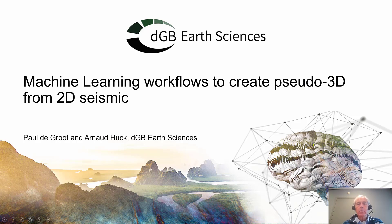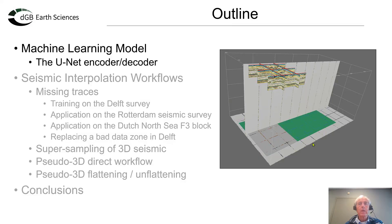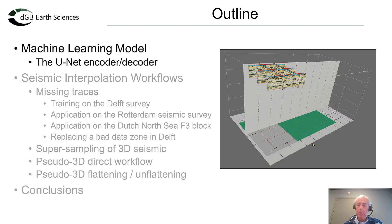Welcome to this presentation about machine learning workflows to create pseudo 3D cubes from 2D seismic. My name is Paul de Groot and my co-author is Arno Huck. I will start with the model we are using, which is a UNET autoencoder, then guide you through a number of workflows for interpolating missing traces, culminating in creating pseudo 3D cubes in two different workflows, and wrap up with some conclusions.